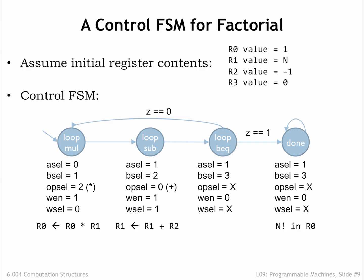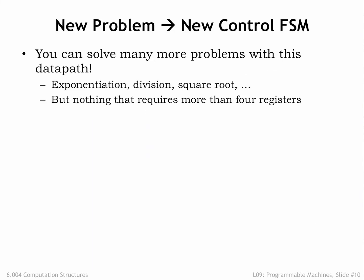As seen here, it's often the case that general-purpose computer hardware will need more cycles and perhaps involve more hardware than an optimized single-purpose circuit. You can solve many different problems with this system — exponentiation, division, square root, and so on — so long as you don't need more than four data registers to hold input data, intermediate results, or the final answer.